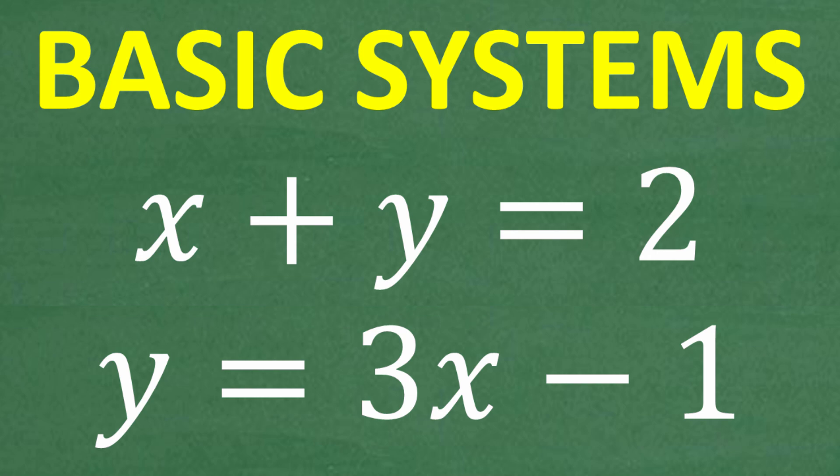If you're taking any sort of algebra course, you're definitely going to need to know how to handle a problem like this. We have two equations with two variables, x and y, and we want to solve for these values x and y. That is the objective of this problem. But what is the big picture topic here? What type of problem is this?